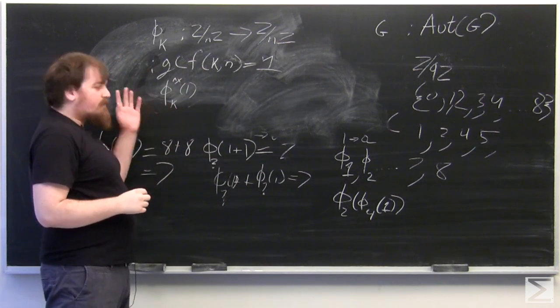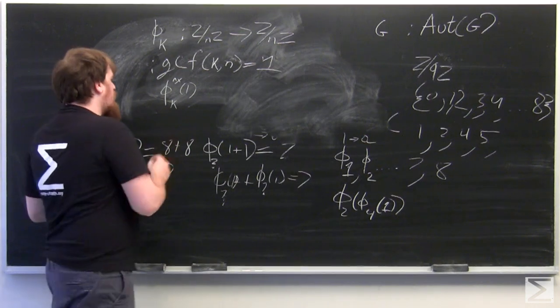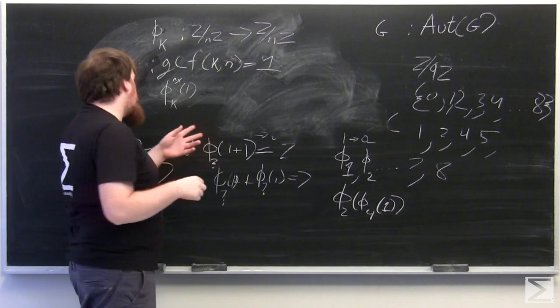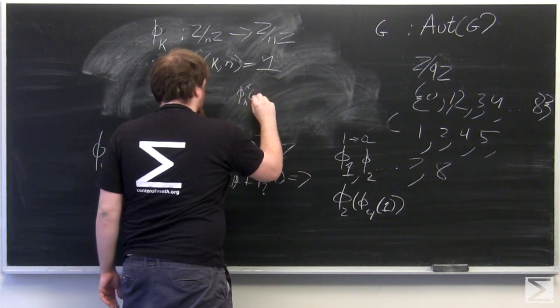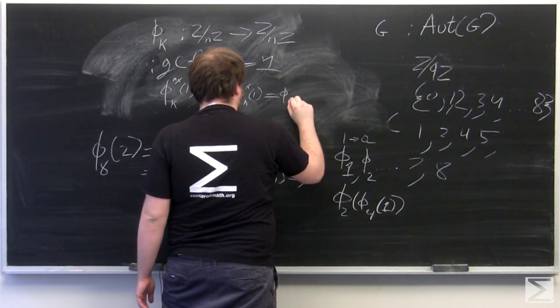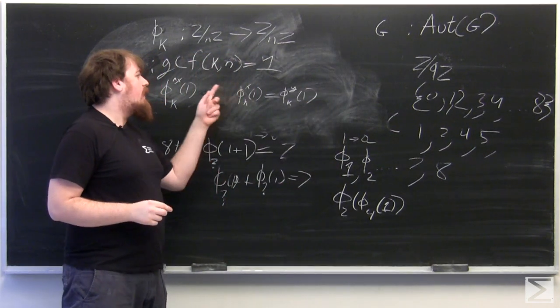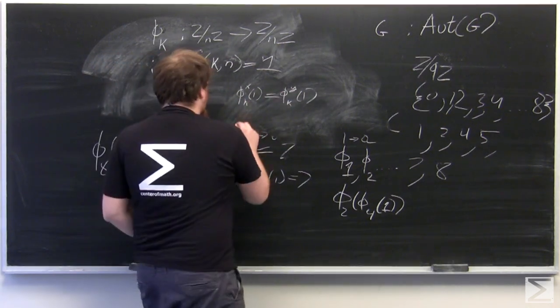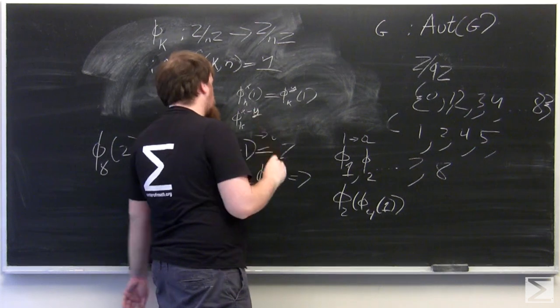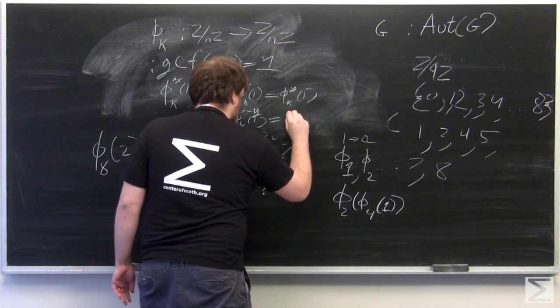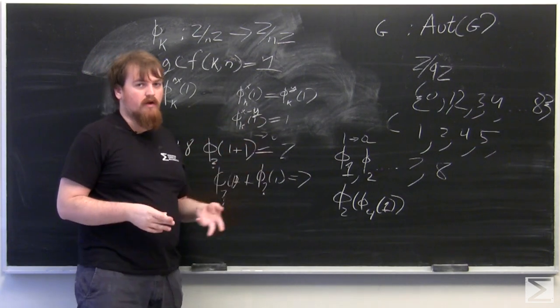If we iterate phi K on 1 eventually, because Z mod NZ is finite, we're going to have to get to some element where two iterations of phi sub K on 1 will be the same. So phi sub K to the X equals phi sub K to the Y. And then this results that phi sub K to the X minus Y, where it's multiplication by K, of 1 equals 1. And so in this group, in the multiplication that results from this, K to the X minus Y will be equal to 1 modulo N.